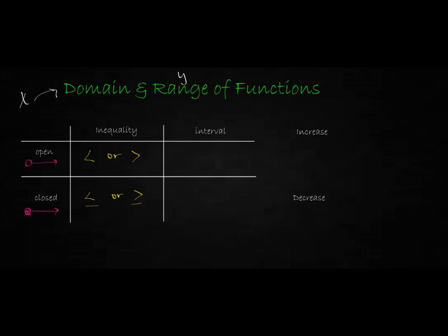Interval notation uses parentheses and brackets. You use parentheses for an open set of numbers, and brackets for a closed set. Just like in the English language, these two symbols go for your smallest number and come first. The last bracket or parenthesis is for your biggest number and comes last.